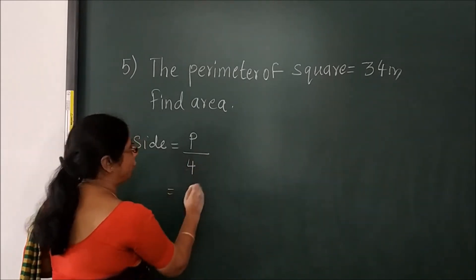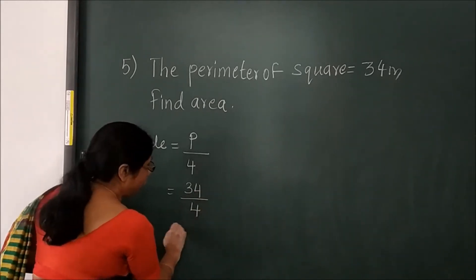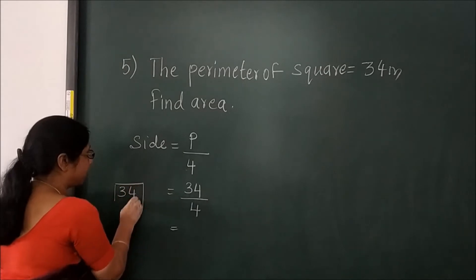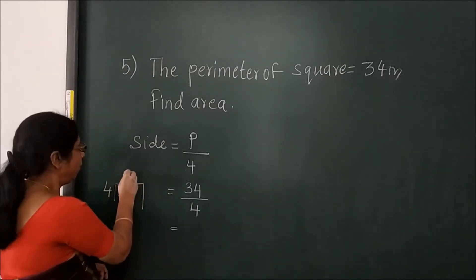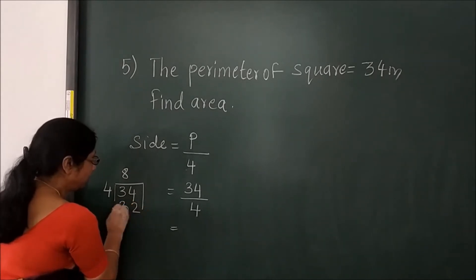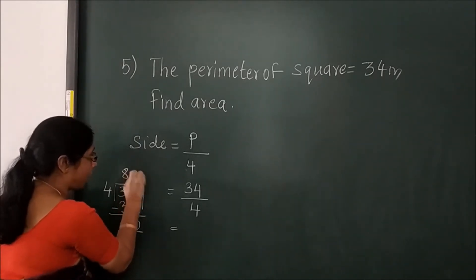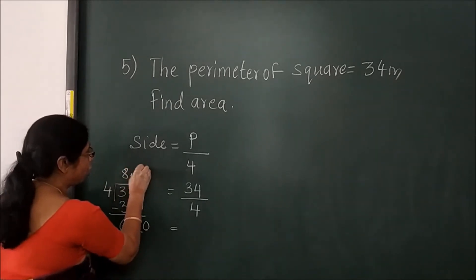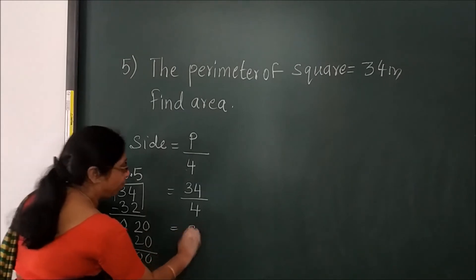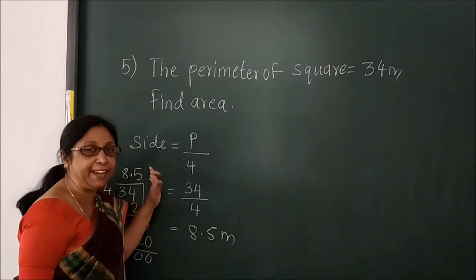Now divide: 34 divided by 4. When you divide you will get a decimal answer. 4 fours are 32, then remainder 2 and 0.5 — so 4 fives are 20. So 8.5 meter is your side.